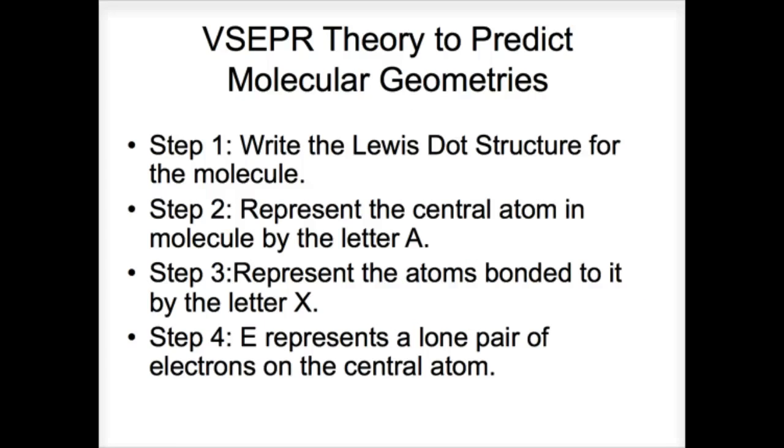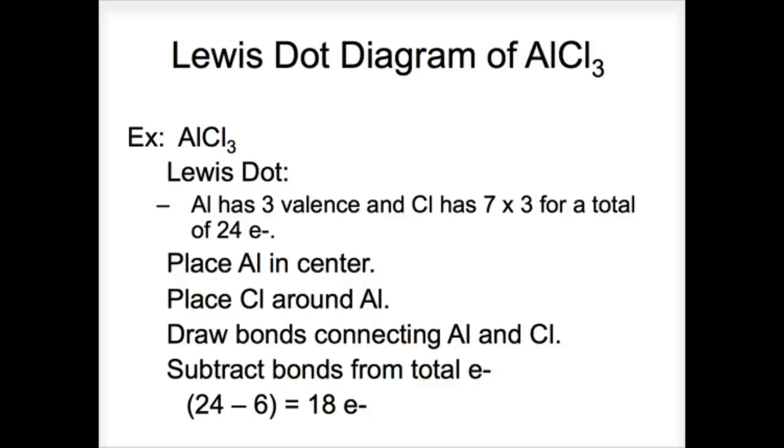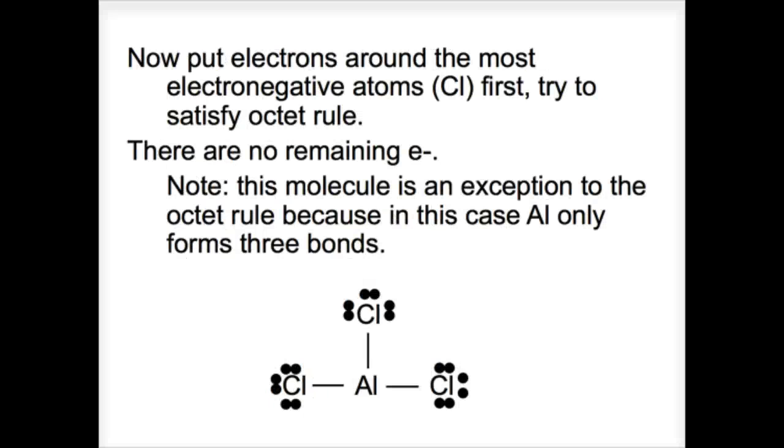A VSEPR formula, and we start substituting. So, we're going to use A, X, and E to represent the parts of our molecule. A is the central atom. X are any atoms bonded to it. E represents our lone pairs of electrons. So, if we start with AlCl3, for example, we get our Lewis structure done. So, my advice, pause the video, draw AlCl3. Make sure you generate the same Lewis structure as this.